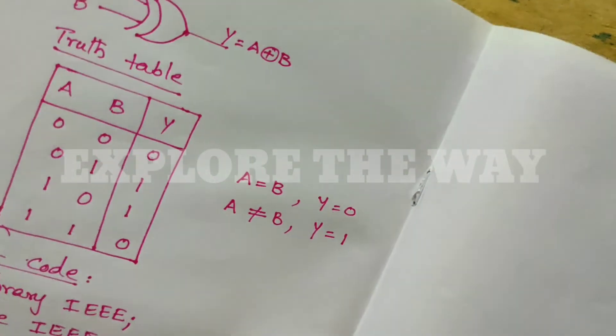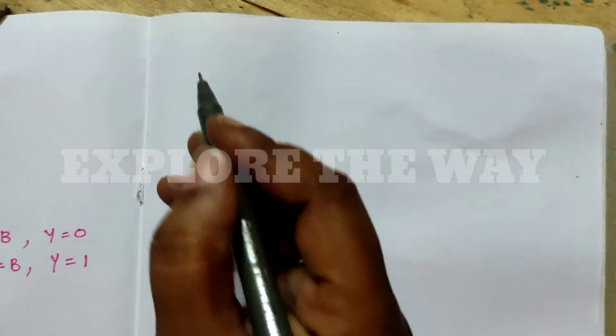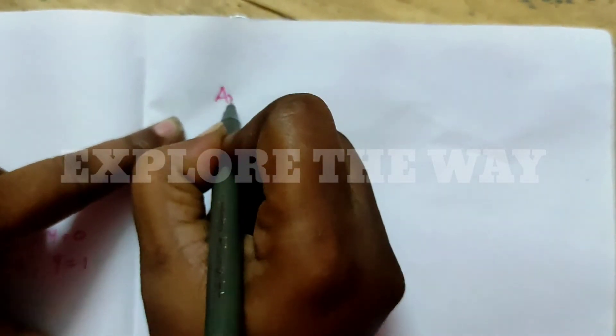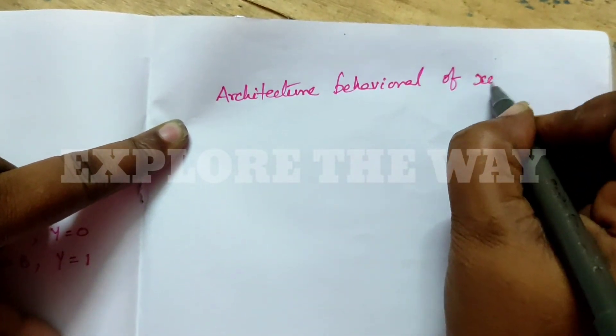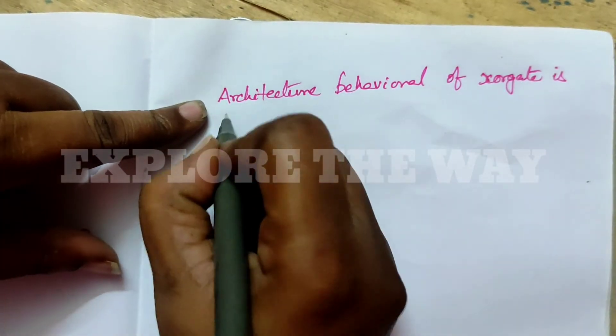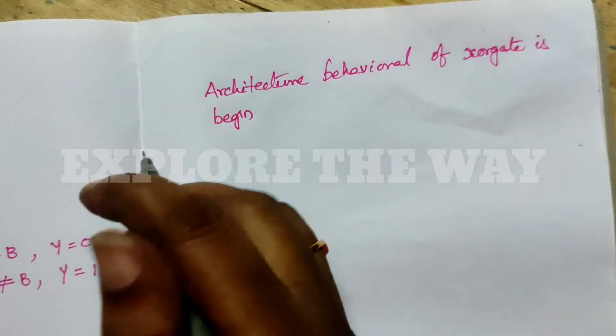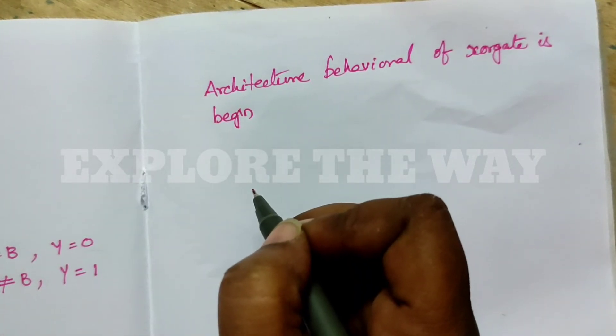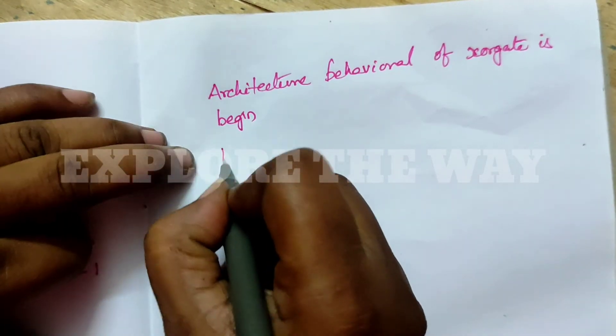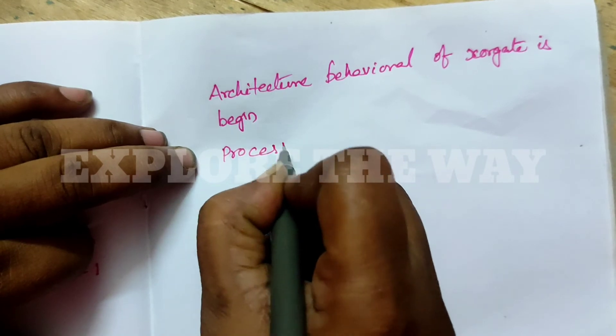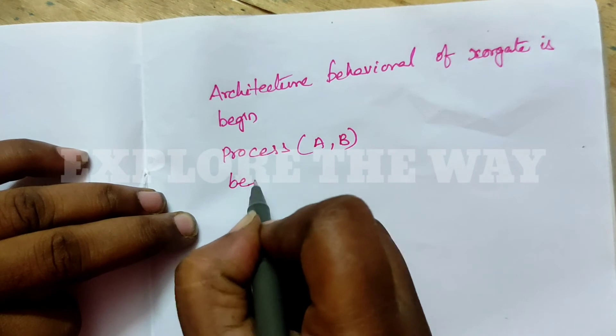I am writing only the architecture because the library and entity are the same. Coming to the architecture in behavioral style, the complete description should be written in a process statement. So write: process open bracket A, B close bracket begin.